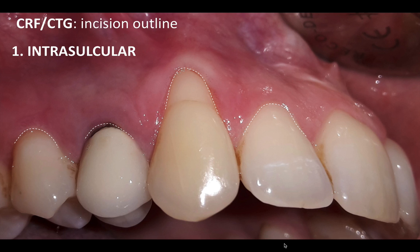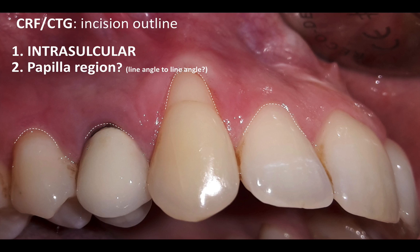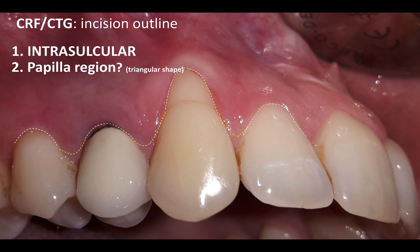On some occasions, depending on tissue quality and circumstances, sometimes you need to extend it more, but at least one tooth adjacent is quite enough. The intrasulcular incision is relatively simple to make. The question is what we do in the papilla region. It really depends on the level of recession. If you're dealing with multiple teeth with similar level of recession where the CEJ is almost at the same level, we can choose an incision outline that is line angle to line angle. But my preference, generally speaking, is to create more of a triangular shape in the papilla region. Once this papilla gets depithelized, I can take this flap — shaped more triangularly — and reposition it coronally.